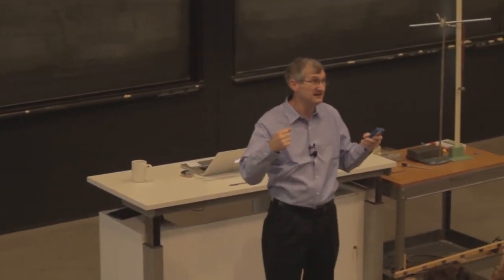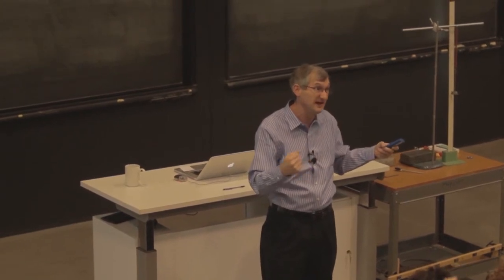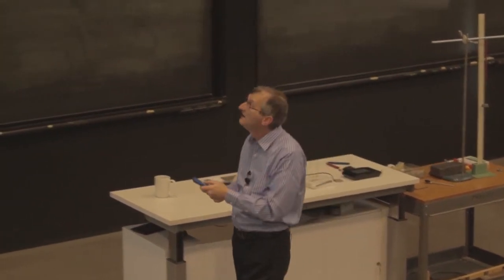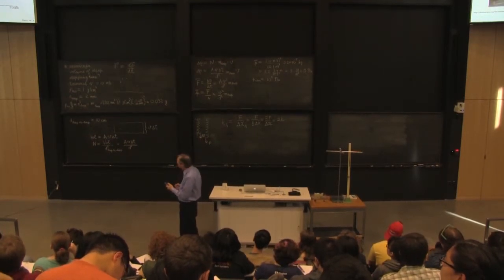Strain is the proportional elongation. So how much has the length of the bar changed compared to its original length? What fraction? So strain has what units? None, because it's the change in length over the original length. So length over length, no units. That's strain. And you can see that it's proportional, at least for a while. And the linear region is described. That's what Hooke's law is telling you.